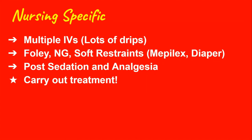Some nursing-specific things post-intubation: get multiple lines because you're going to have sedation and analgesia going plus other medications to treat the patient. Place the Foley and NG tube, soft restraints, and if you get the chance turn them and put a Mepilex on them and a diaper just in case. The Foley is to keep track of urine output. The NG tube is for decompression to prevent aspiration of stomach contents, and eventually meds can be given through it. Soft restraints prevent accidental extubation. Mepilex prevents pressure ulcers. Don't forget to get your patient on sedation as quickly as possible — you should already know what medications will be used because you're proactive, not reactive.